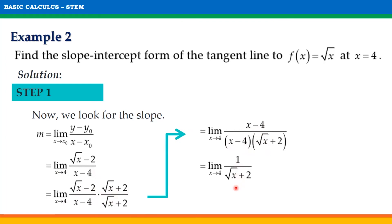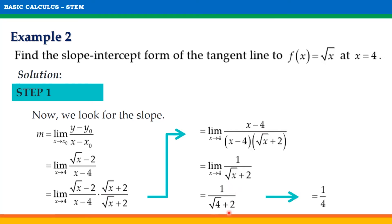On this simplified expression, when we substitute 4 for x, the denominator will not equal 0. Therefore, we can directly substitute 4 for x, giving us 1 over square root of 4 plus 2. Since square root of 4 equals 2, we get m equals 1 over 4. Therefore the slope of the tangent line is 1/4.